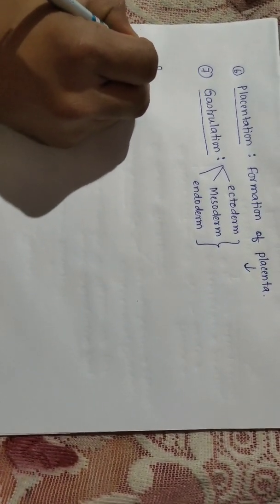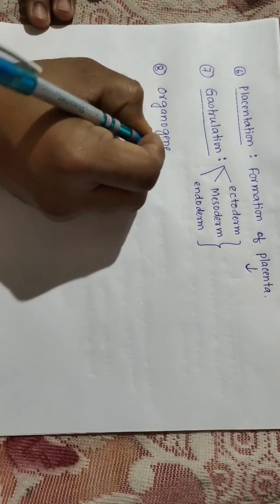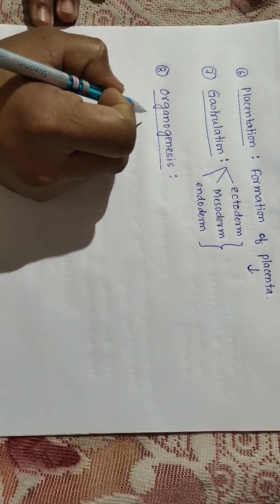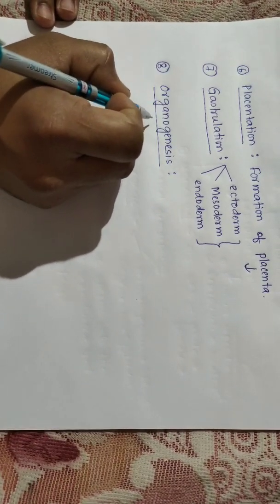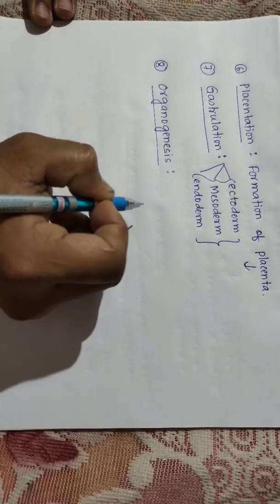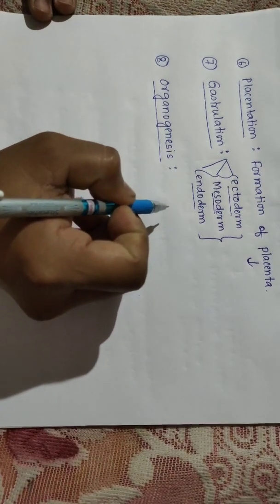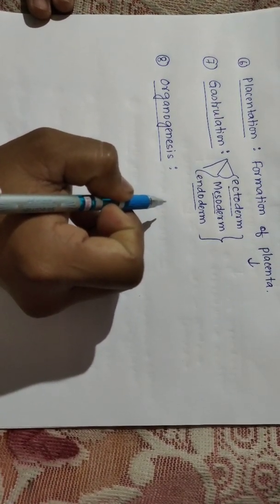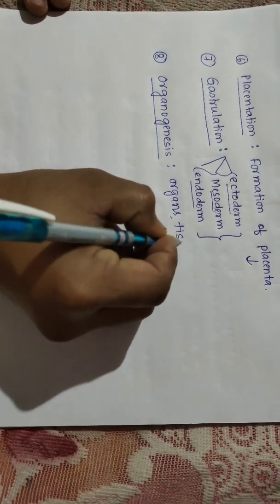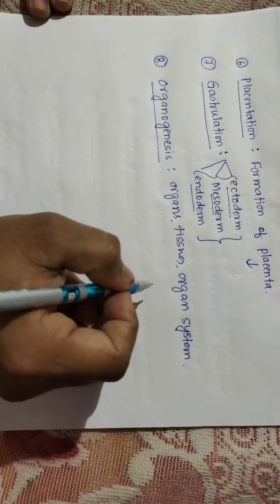The eighth phase is called organogenesis. Organogenesis means the formation of organs and organ systems. These organs and organ systems are formed or derived from all three germ layers — that means ectoderm, mesoderm, and endoderm will give rise to various organs, tissues, and organ systems. So organogenesis is the process of formation of organs, tissues, and organ systems from the three germ layers.